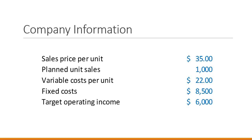Let's take a company with the following given information: sales price per unit $35, planned unit sales 1,000 units, variable costs per unit $22, fixed costs $8,500, and target operating income $6,000. Variable costs are presented on a per unit basis, so we'll need to multiply by number of units to get a total. Fixed costs are already in total — fixed costs per unit are typically less meaningful, so we refer to fixed costs in total and variable costs on a per unit basis.